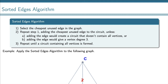Our next algorithm is the sorted edges algorithm, and this algorithm is not optimal. However, it does overcome some of the shortcomings of the nearest neighbor and repeated nearest neighbor algorithms. For this algorithm we're not going to worry about a starting point — we're just going to look at all the edges and pick the smallest edge weight. We'll include it in our circuit, and continue until we get a full circuit that includes all the vertices. We're not allowed to add an edge if it creates a circuit that doesn't contain all the vertices, and we're not allowed to add an edge that would give a vertex degree 3, because no vertex in a Hamiltonian circuit will have degree 3.